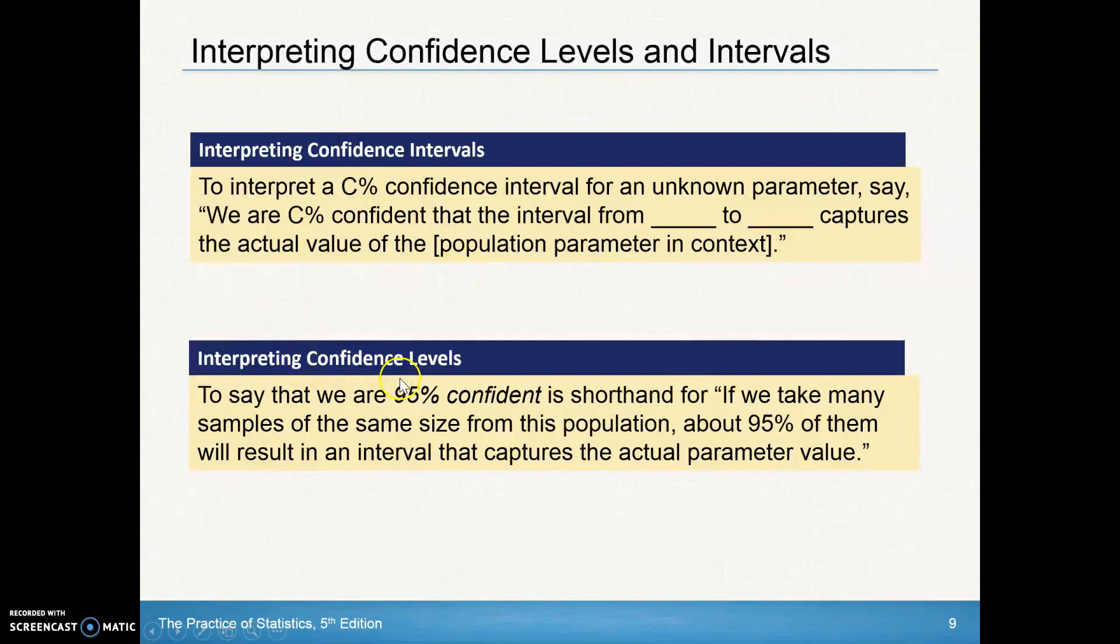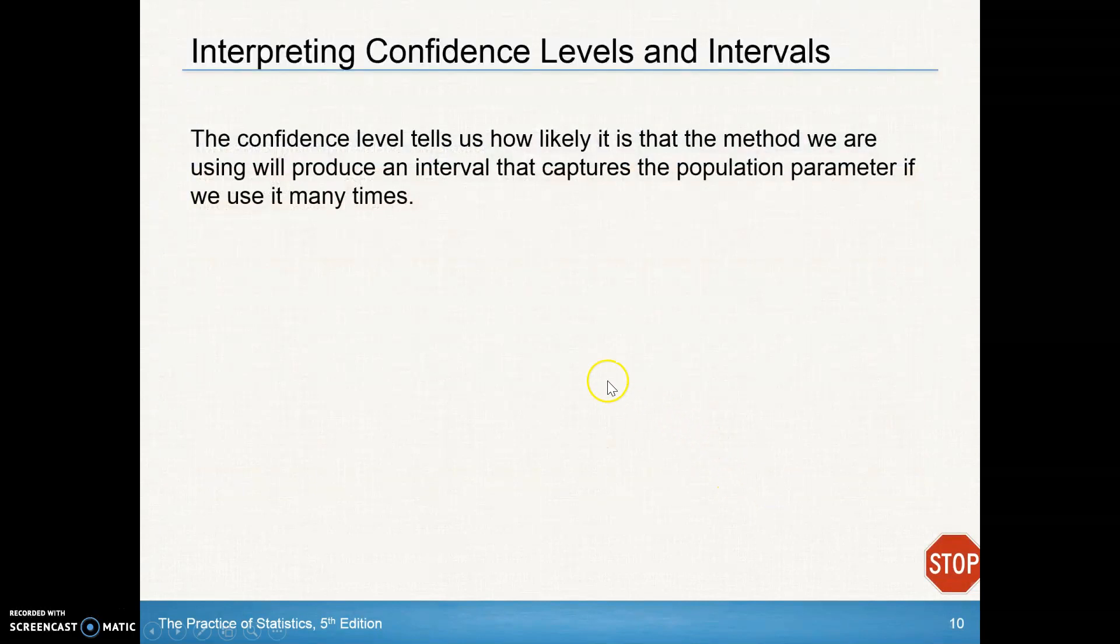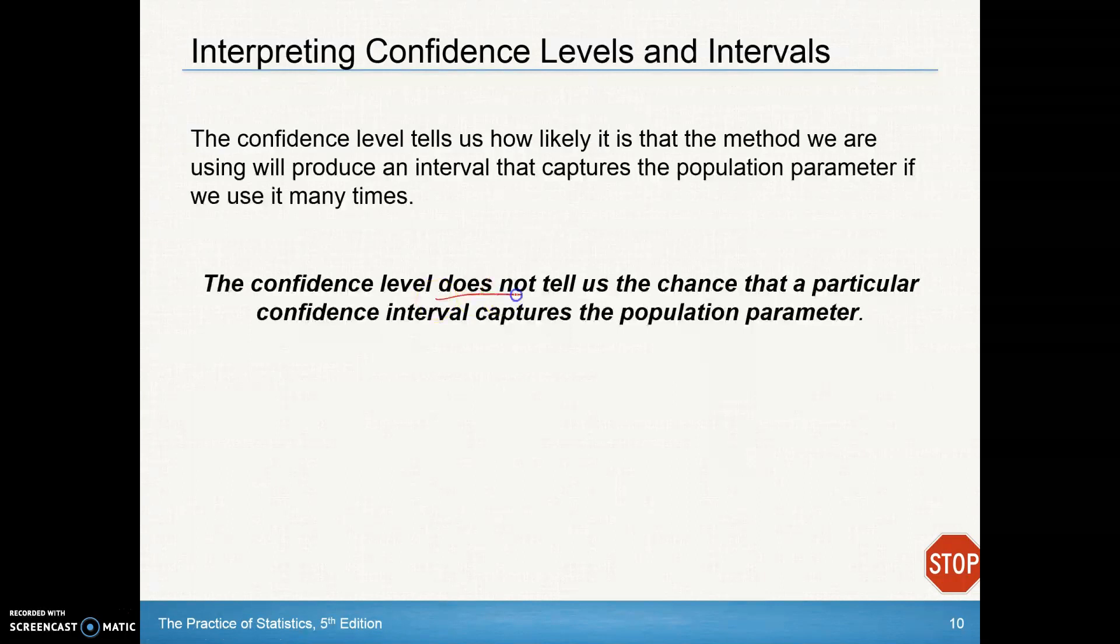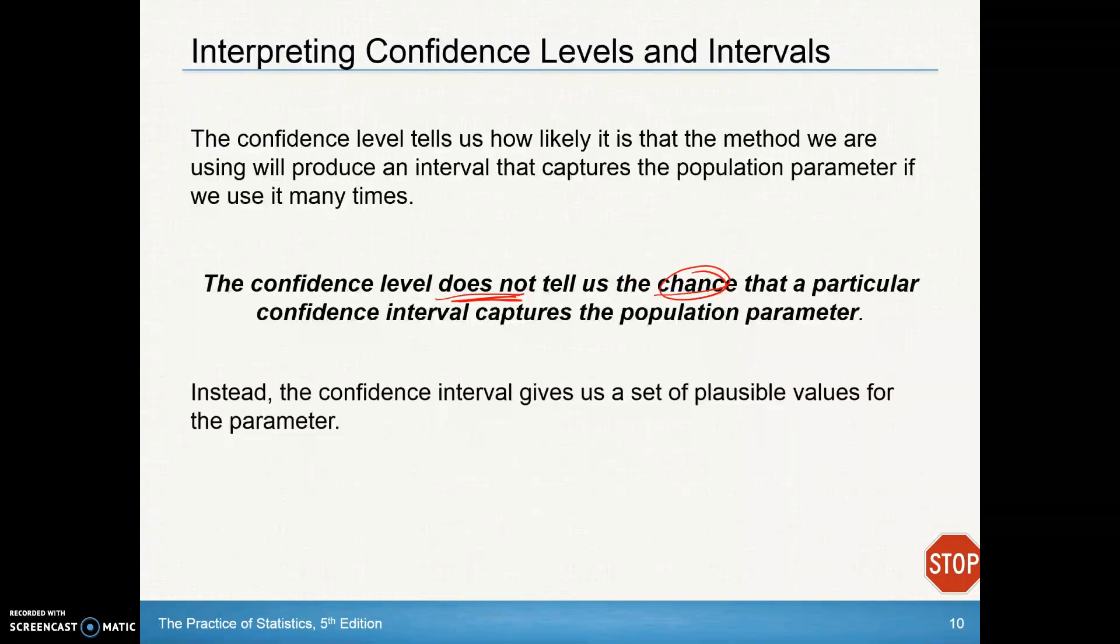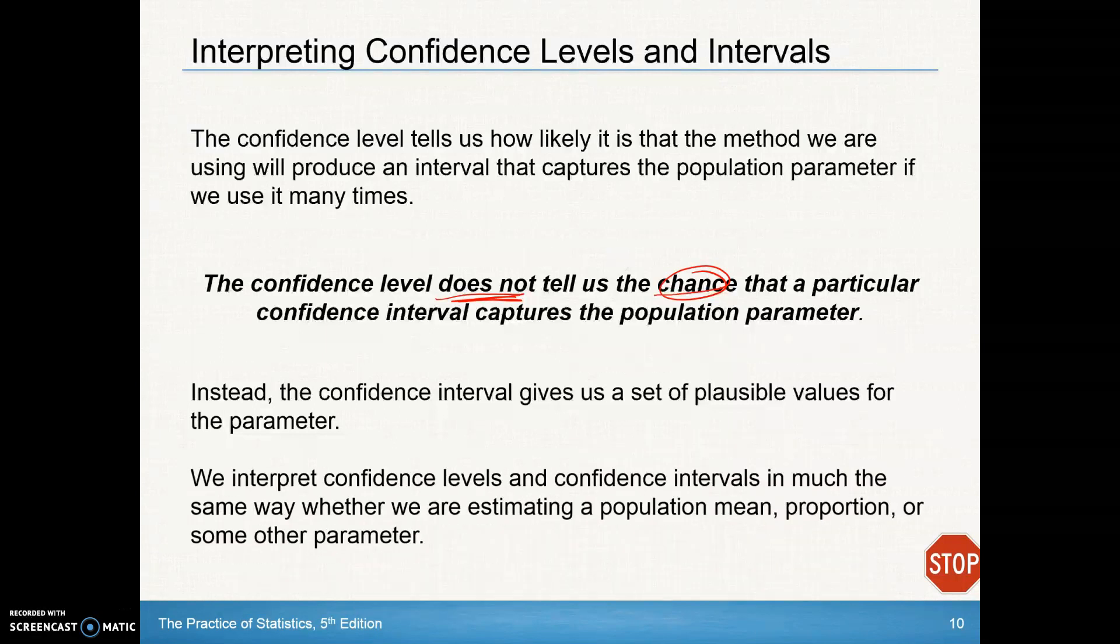If you're asked to interpret confidence levels, to say that we are 95% confident in shorthand for what we say is, if we take many samples of the same size from this population, about 95% of them will result in an interval that captures the actual parameter value. The confidence level tells us how likely it is that the method we are using will produce an interval that captures the population parameter if we use it many times. The confidence level does not, does not tell us the chance that a particular confidence interval captures the population parameter. It either does or it doesn't. Instead, the confidence interval gives us a set of plausible values for the parameter. We interpret confidence levels and confidence intervals in much the same way we are estimating a population mean, proportion, or some other parameter.